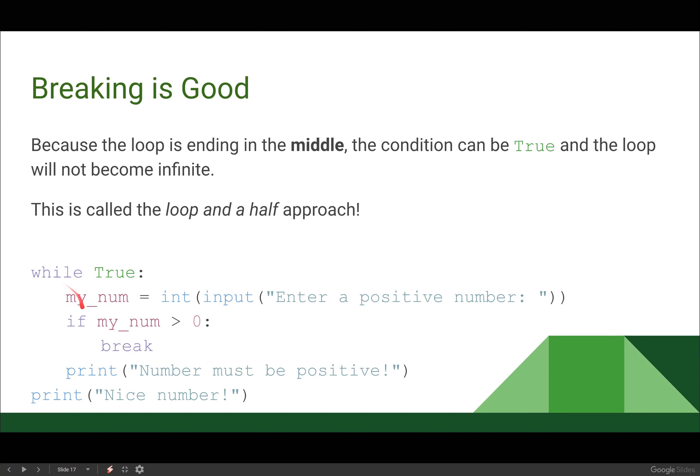because it loops, loops, loops, until it gets halfway through the loop, at which point it stops. So loop and a half. Does that make sense, how we can stop a loop halfway through?